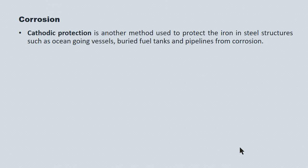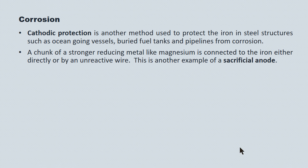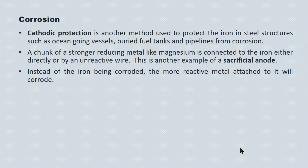Cathodic protection is another method used to protect steel and iron structures such as ocean-going vessels, buried fuel tanks, and pipelines. A chunk of a stronger reducing agent like magnesium is connected to the iron, either directly or by an unreactive wire. The magnesium is a sacrificial anode — it's the strongest reducer in the system, so it will be completely oxidized by the environment before the iron is oxidized. Instead of the iron being corroded, the more reactive metal will be corroded first.